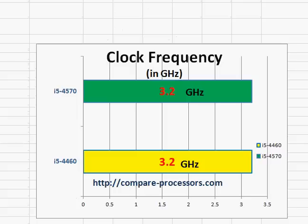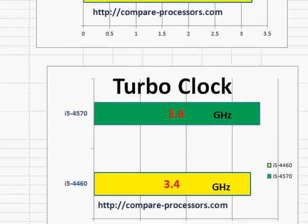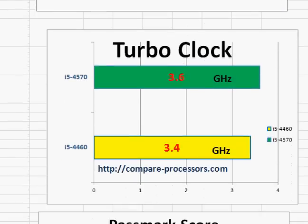Without hyper-threading, we have only four threads instead of eight, which could have potentially improved performance by around 15% or so. Comparing the two processors, the base clock frequency is the same at 3.2 GHz for both. The difference is in the turbo clock frequency — the i5-4570 is marginally higher at 3.6 GHz.